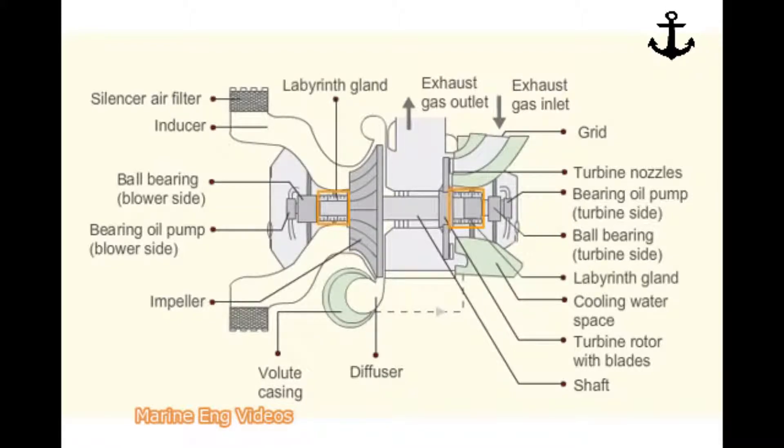Labyrinth glands prevent leakage of air and exhaust gas. On the exhaust gas side, the labyrinth gland is supplied with sealing air under slight pressure from the blower. This prevents exhaust gas from escaping to the oil space.